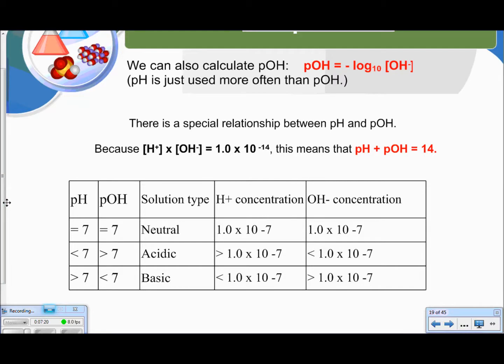We can also calculate pOH. So pOH equals the negative log base 10 of the hydroxide ion concentration. So pH is just used more often than pOH. There's a special relationship between pH and pOH. If you multiply together the hydrogen ion concentration and hydroxide ion concentration, you get 1.0 times 10 to the negative 14, which means that if you add together your pH and your pOH, that equals 14, which is at the very top of our pH scale. So it's not terribly hard to memorize.